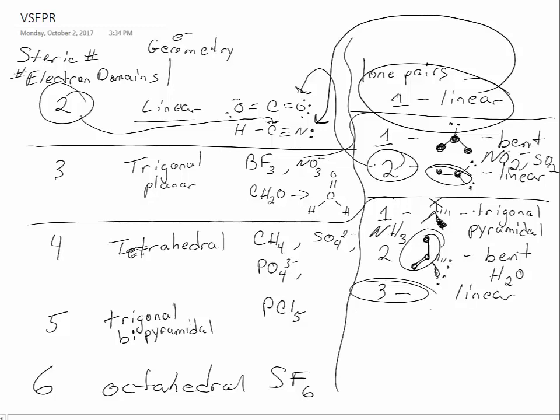Here, under trigonal bipyramidal, now we can consider one lone pair. That lone pair is going to have to go to the equator. We're always going to see that lone pair somewhere around the equator. With the atoms that are left around the central atom, if you turn that the right way, then you would see a seesaw shape.